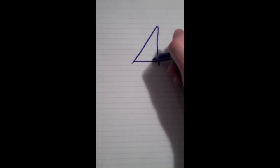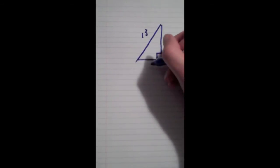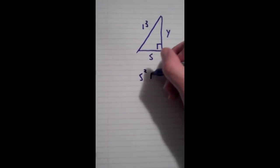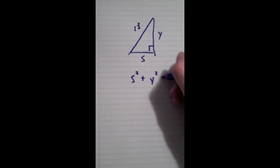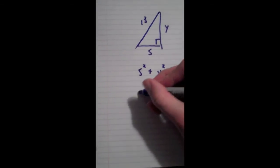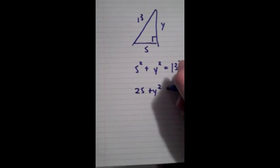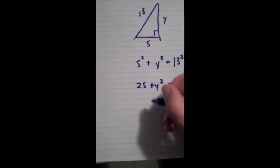So drawing this triangle again, we got the hypotenuse of 13. The bottom is 5. And then we've got y. So 5 squared plus y squared is equal to 13. Or 25 plus y squared. Oh, sorry, 13 squared. 25 plus y squared equals 169.